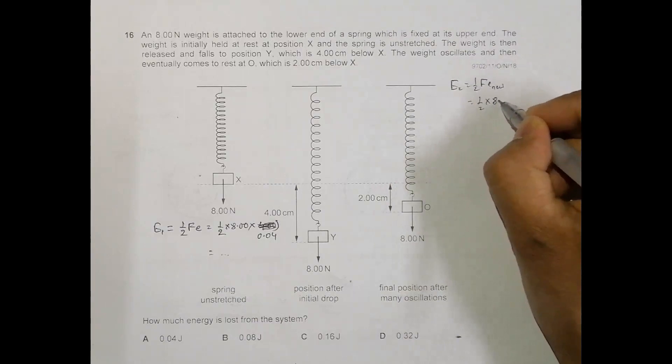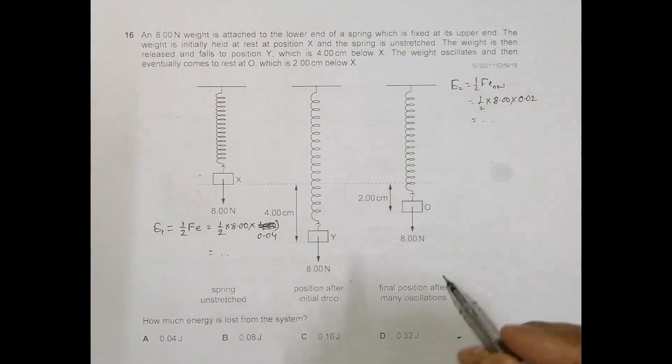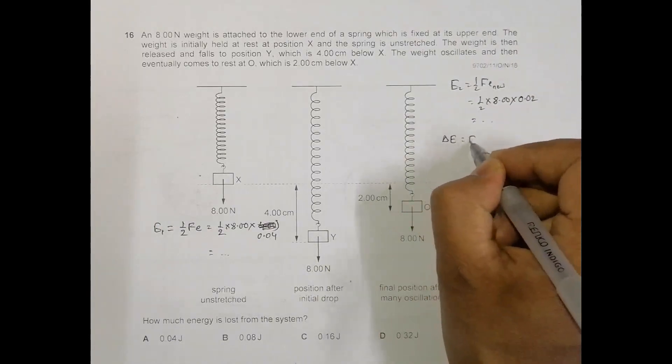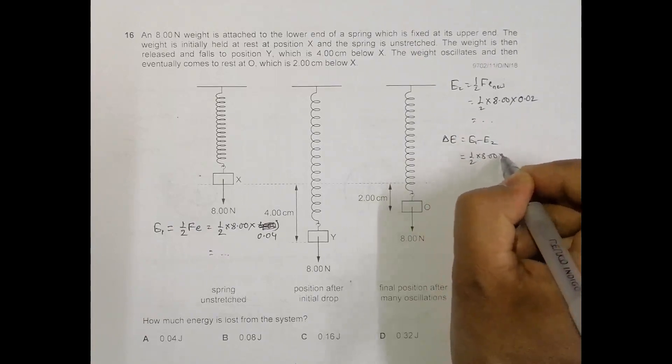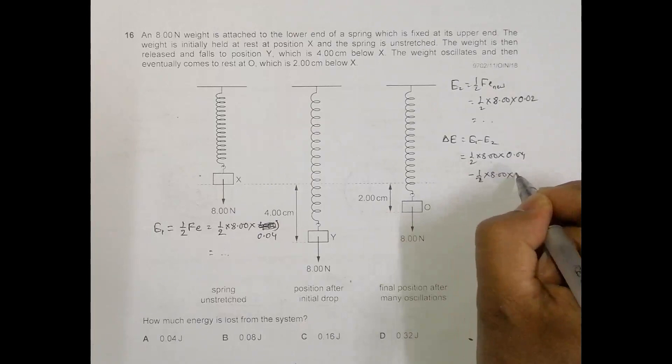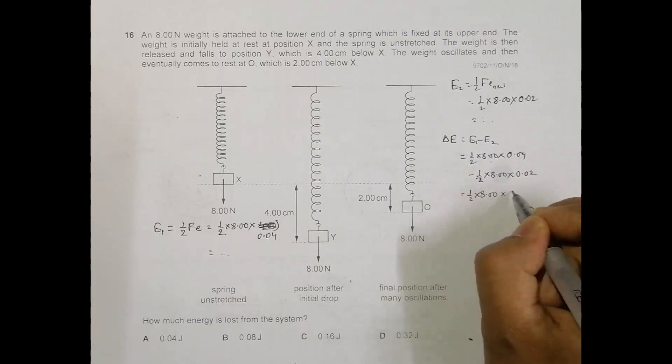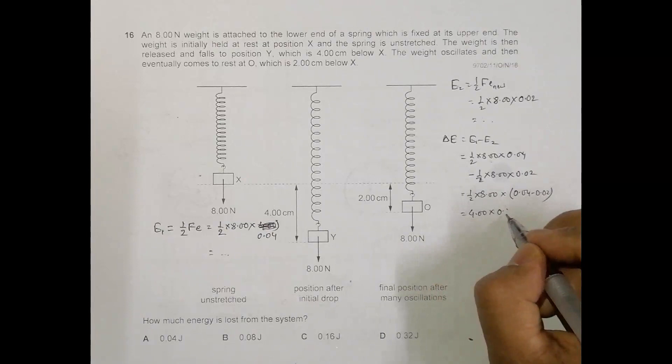The loss of energy coming from here to here is equal to E1 minus E2. That's equal to 1/2 times 8.00 times 0.04 minus 1/2 times 8.00 times 0.02. Taking common 1/2 times 8.00 times (0.04 minus 0.02), this equals 4.00 times 0.02, which equals 0.08 Joules.